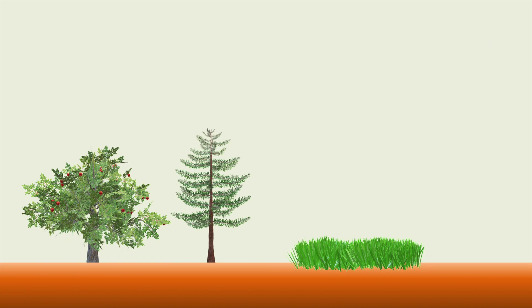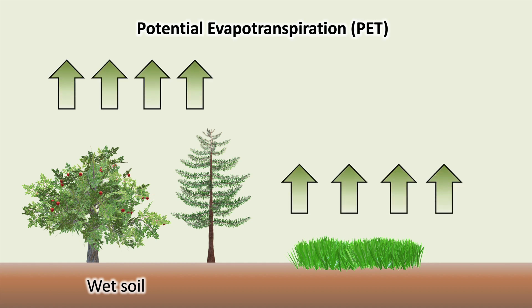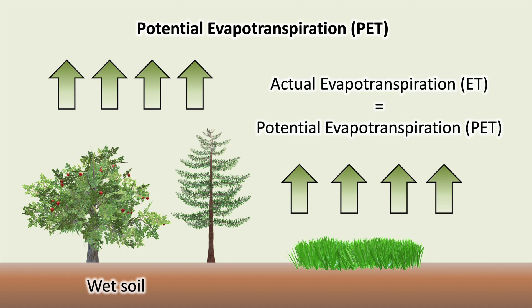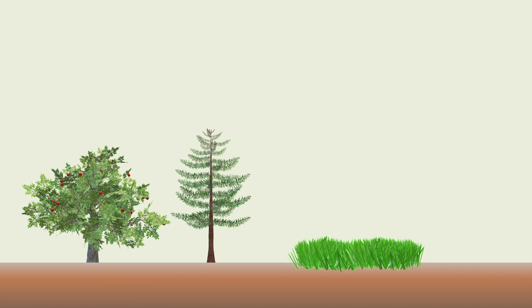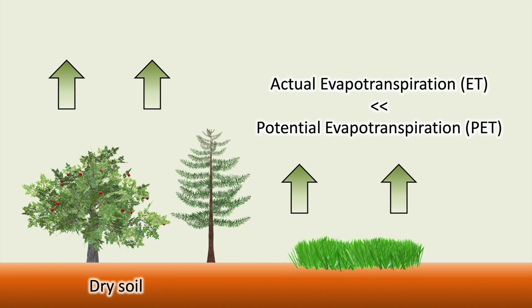When there is sufficient water available, evapotranspiration rates will be at their maximum. This maximum possible rate is called potential evapotranspiration. When there is sufficient water available, the actual evapotranspiration rate will be equal to the potential evapotranspiration rate. As the amount of available water decreases in the soil, the actual evapotranspiration rate starts to decrease, and actual evapotranspiration can be much less than potential evapotranspiration. The availability of water is therefore critical in controlling evapotranspiration rates.